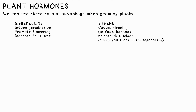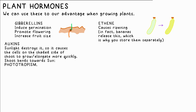Plants also have their own hormones which we can utilize when growing plants. Gibberellins cause seed germination to occur — we can add them to seeds to give them a wake-up call. Gibberellins also promote flowering and increase the size of fruits. Ethene induces the ripening of fruits, so we can add it to bananas, for example, when they're in transit.